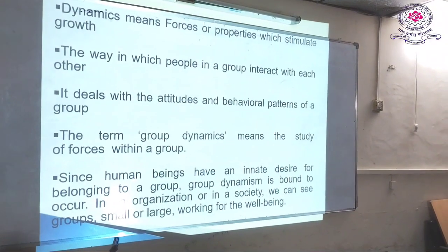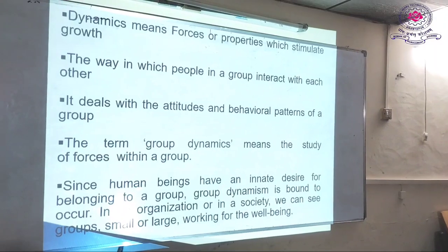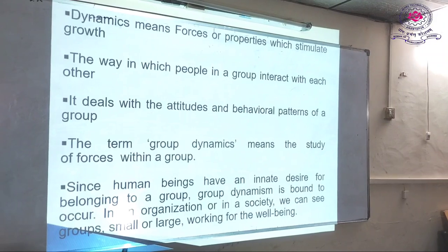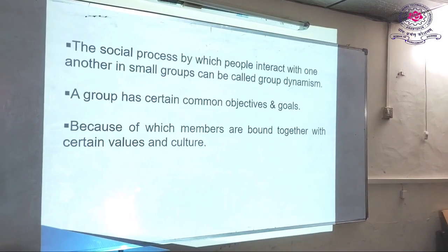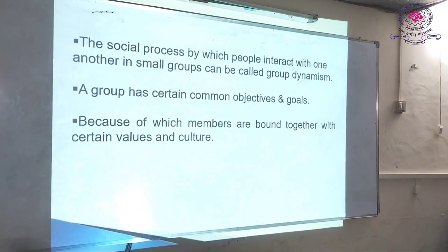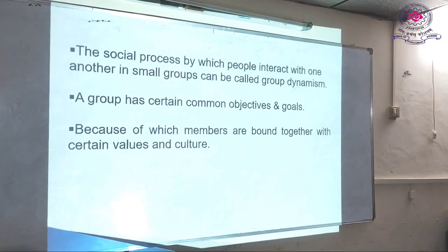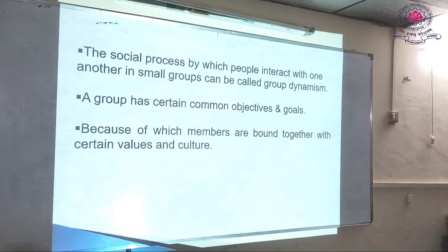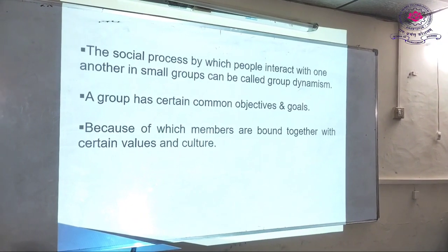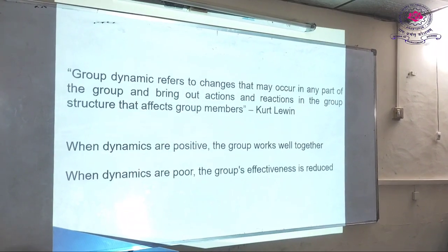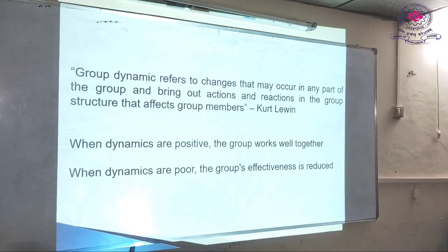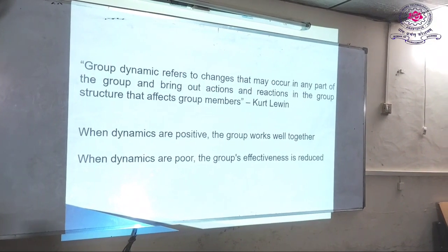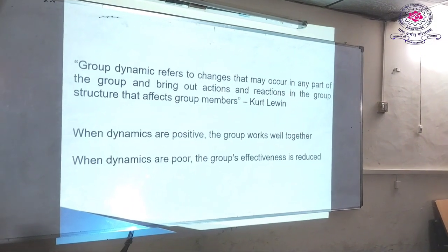In an organization or in a society, we can see small groups or large groups working for well-being. The social process by which people interact with one another in small groups can be called group dynamism. A group has certain common objectives and goals, because of which members are bound together with certain values and culture. Group dynamics refers to the changes that may occur in any part of the group and bring out actions and reactions in the group structure that affect group members.